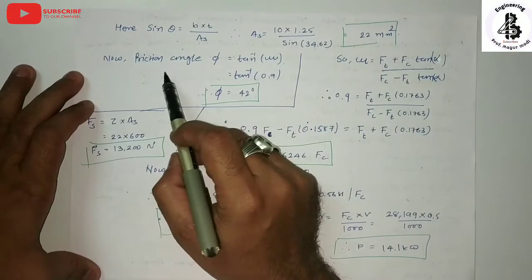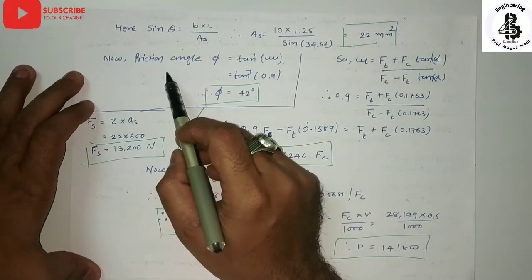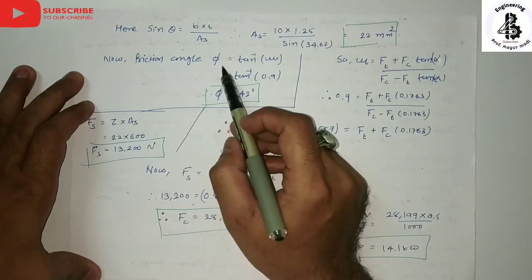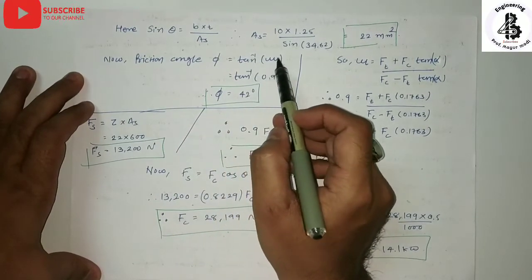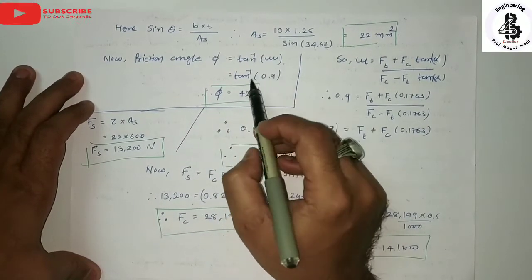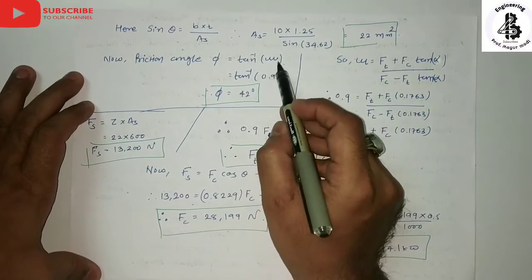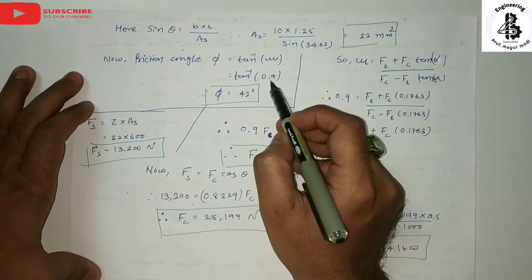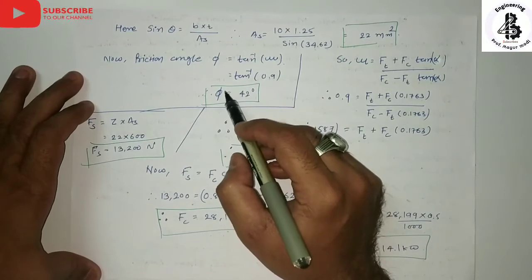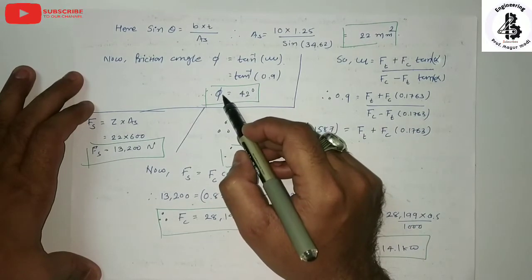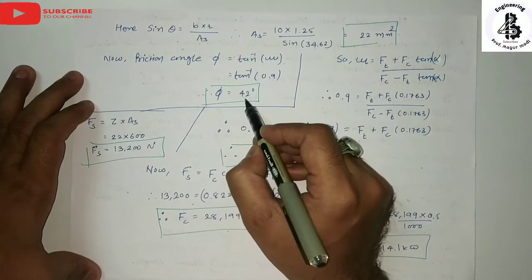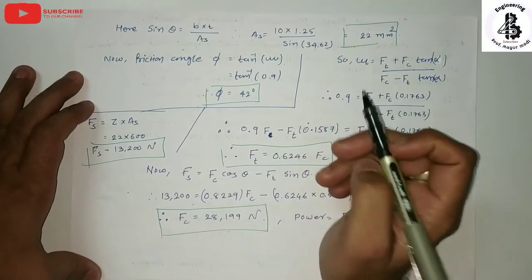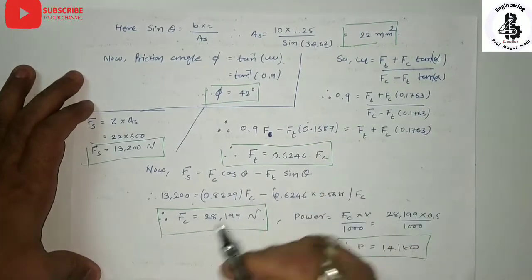For the friction angle: friction angle = tan⁻¹(mu). Substituting mu = 0.9, the friction angle equals 42 degrees.